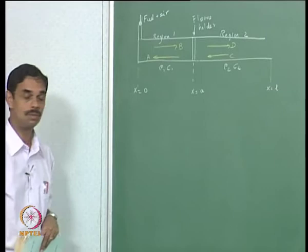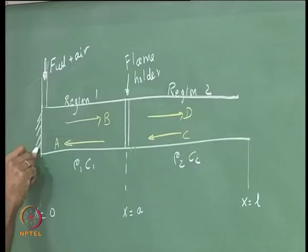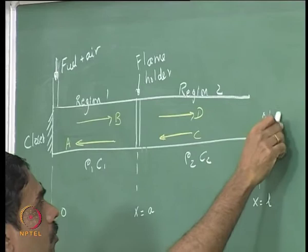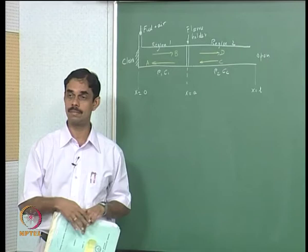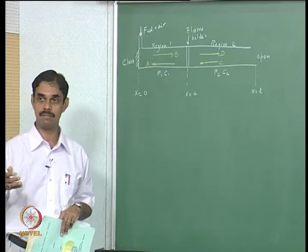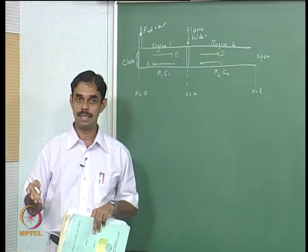We had a boundary condition which is closed here and open here. We solved for the eigenvalues and looked at the sign of the eigenvalues. The eigenvalues had a real part and an imaginary part, and we showed that the imaginary part shows the growth rate or the decay rate. We could find out under what conditions you would have growth and under what conditions decay, assuming a simple n-tau model.